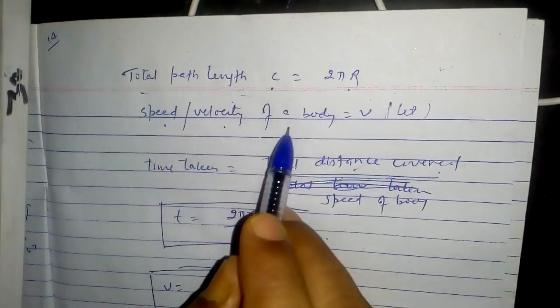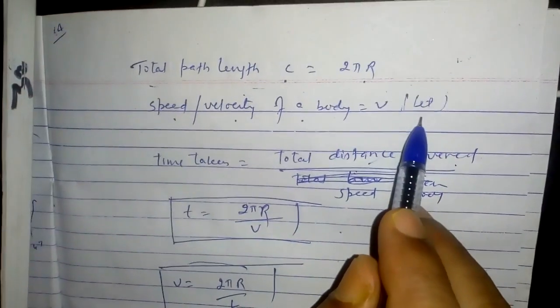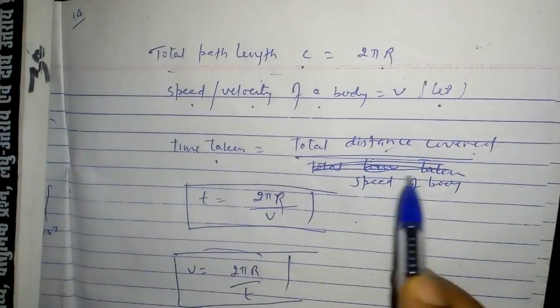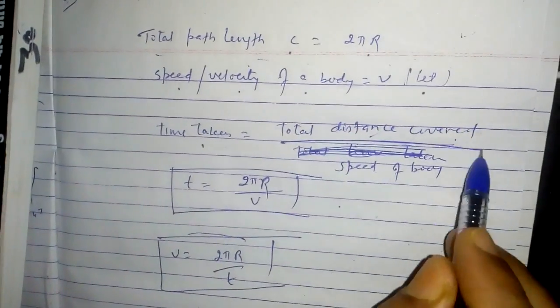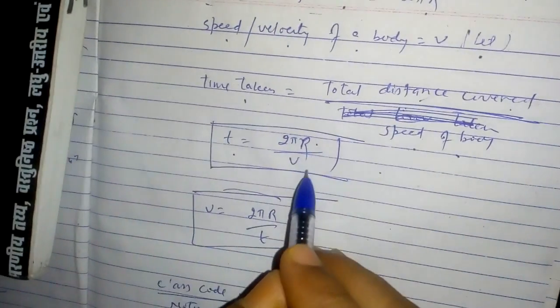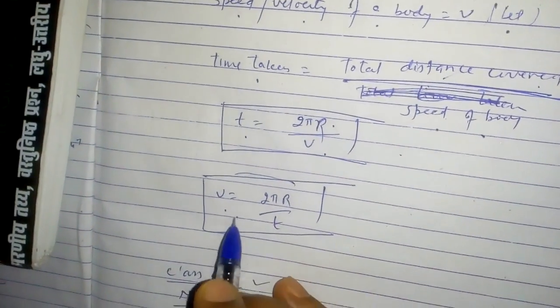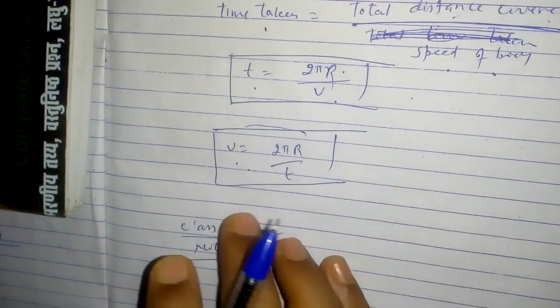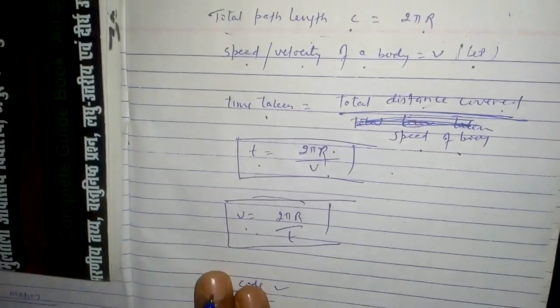The speed and velocity of the body is v. Now, time taken equals total distance covered divided by speed of the body. That is, t = 2πr / v, or v = 2πr / t. This means that when a body rotates around a circular path, the time taken is 2πr / v, and the velocity equals 2πr / t.